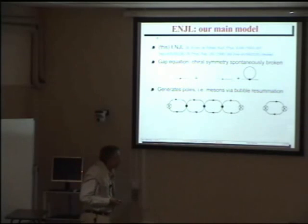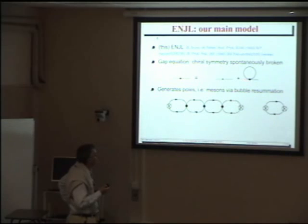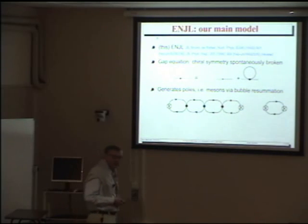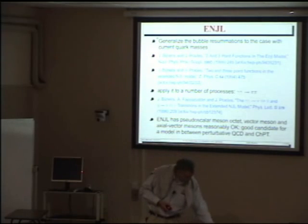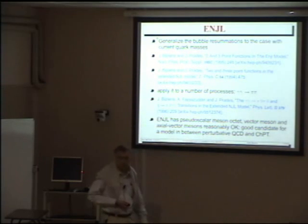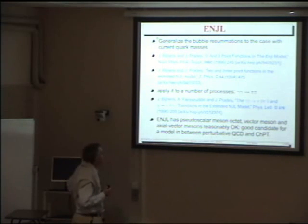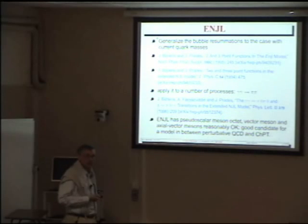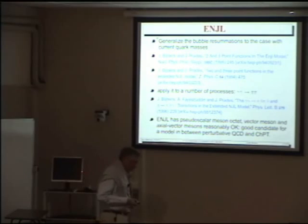This particular version you can find in this paper, and one of the big things of the model is that it creates spontaneously a constituent quark mass of about the right size. By having this type of bubble re-summations you can actually produce poles which are the mesons in each channel. We did generalize this bubble re-summation to the case with current quark masses, and we applied it to a number of processes — gamma gamma to pi pi, for instance. Since this was a very simple model which had vector mesons and light mesons both with relatively large couplings, we thought this was a very good model to put in between perturbative QCD and chiral perturbation theory.